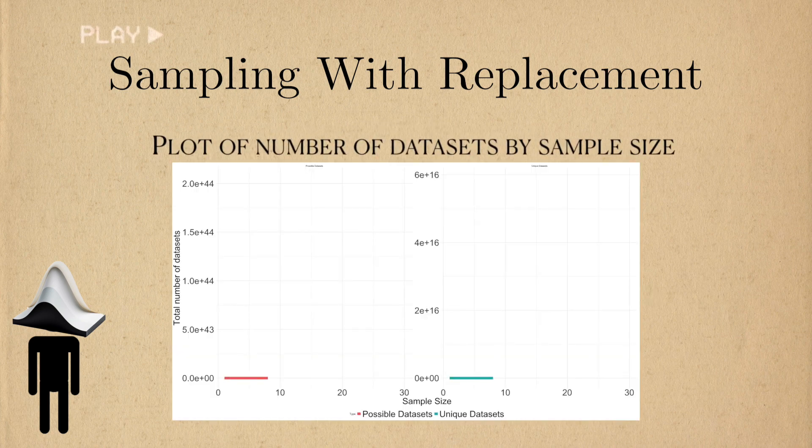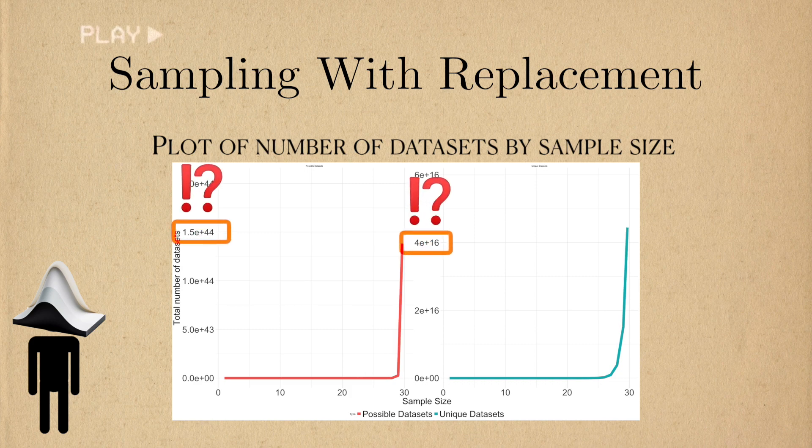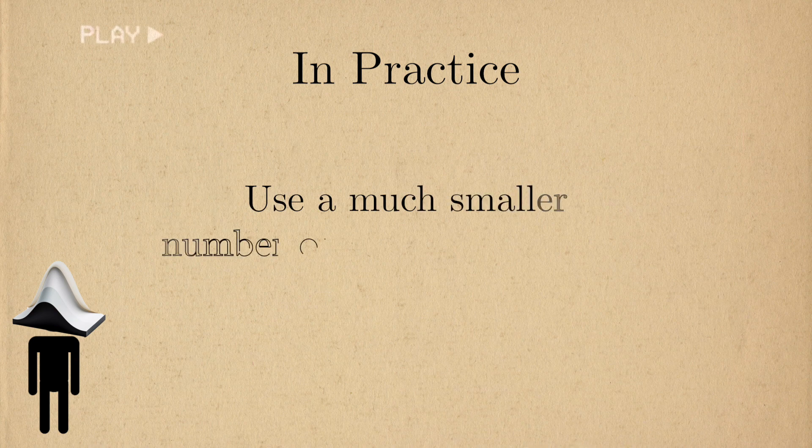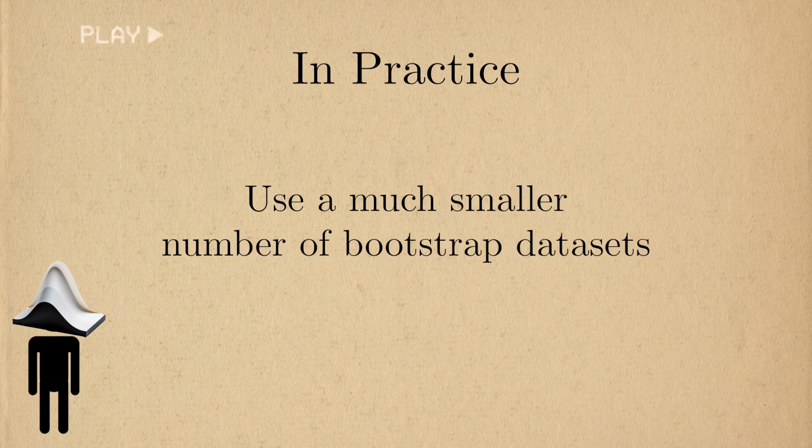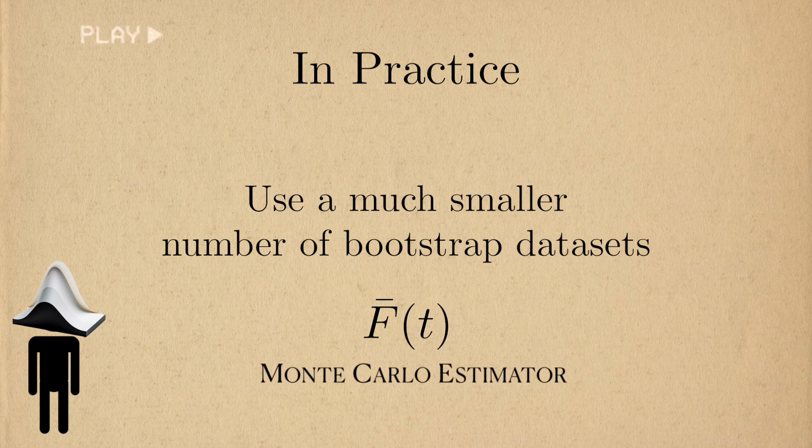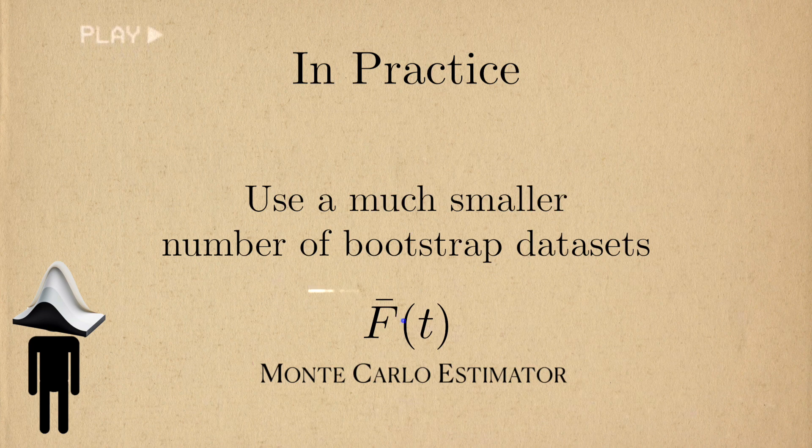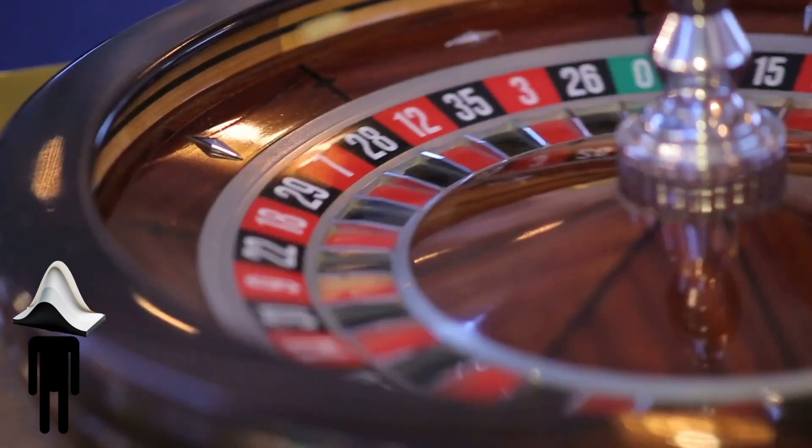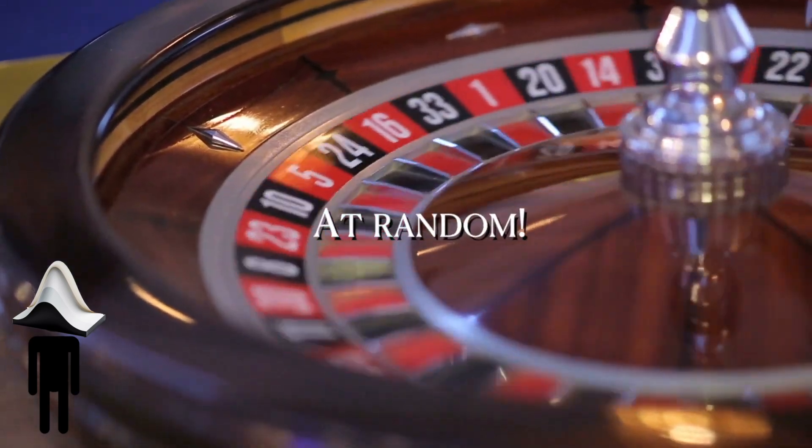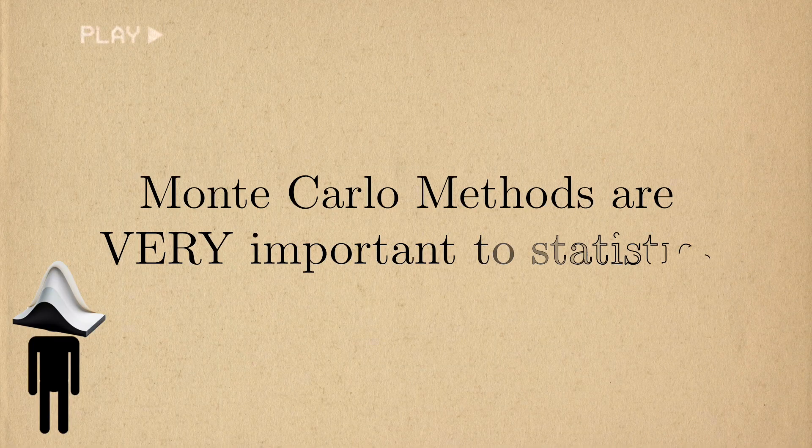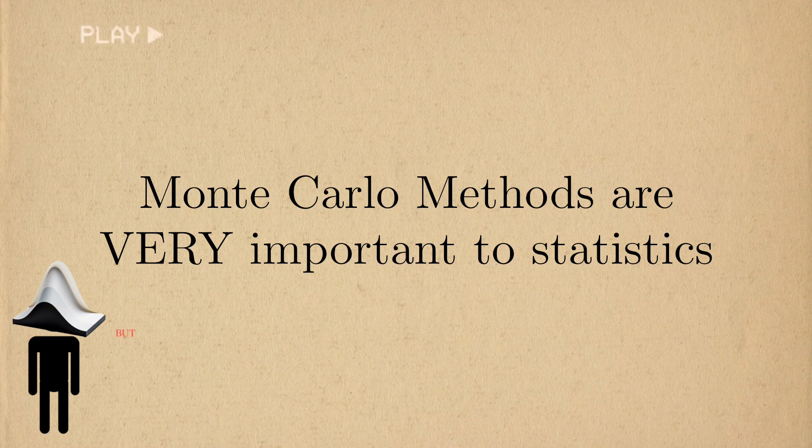Even with medium-sized datasets, this number of bootstrap datasets can grow too large to handle with even the most powerful computers. In practice, we only use a subset of these bootstrap datasets and form what's called a Monte Carlo estimate of the bootstrap distribution. We denote the Monte Carlo estimate as this. It's called Monte Carlo because we're picking multiple bootstrap samples at random. Monte Carlo methods are very important to statistics, but we'll have to wait for another video to discuss them.